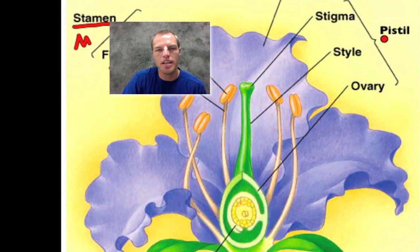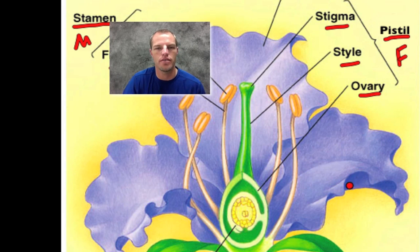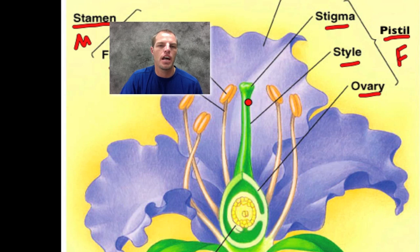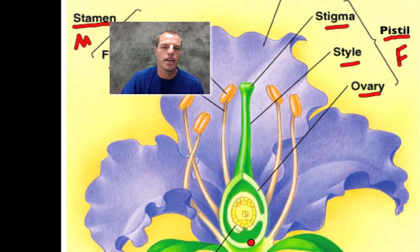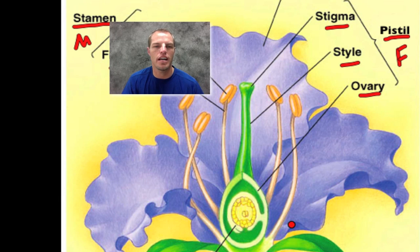Now let's look at the pistil — the female reproductive structure of the flower. The stigma, style, and ovary together make up the pistil. The stigma is at the top and is sticky so that pollen can stick to it. The style runs down through the middle, where the pollen makes its way down to the ovary. Inside the ovary we have an ovule, and the ovule holds the egg — which needs to get fertilized for the plant to reproduce.